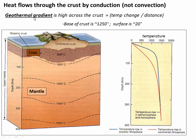That difference is called a geothermal gradient. If the geothermal gradient is steeper, that means the temperature changes faster — we'd call that a high gradient. We have very high gradients where the crust is thinner, for example over thin oceanic crust. If the temperature changes a little bit more slowly, that would be called a low geothermal gradient, and that would be more typical of continental crust.